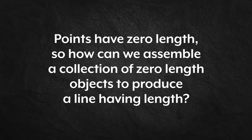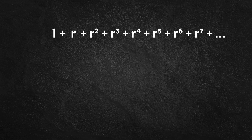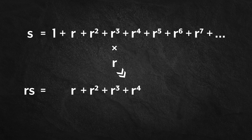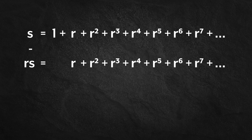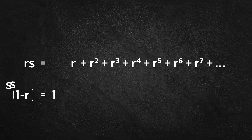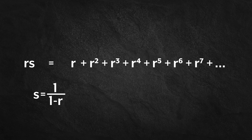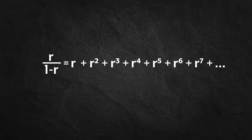Now let's conclude by answering this question: points have zero length, so how can we assemble a collection of zero-length objects to produce a line having length? To answer this question, we're going to make use of geometric series. Let's assume that this geometric series sums to s. Multiplying it by r, we get rs equals r plus r squared plus r cubed and so on. And subtracting the bottom from the top, we get s minus rs equals one. Factoring out the s and solving for s, we get s equals one over one minus r. And so this infinite series equals r over one minus r.